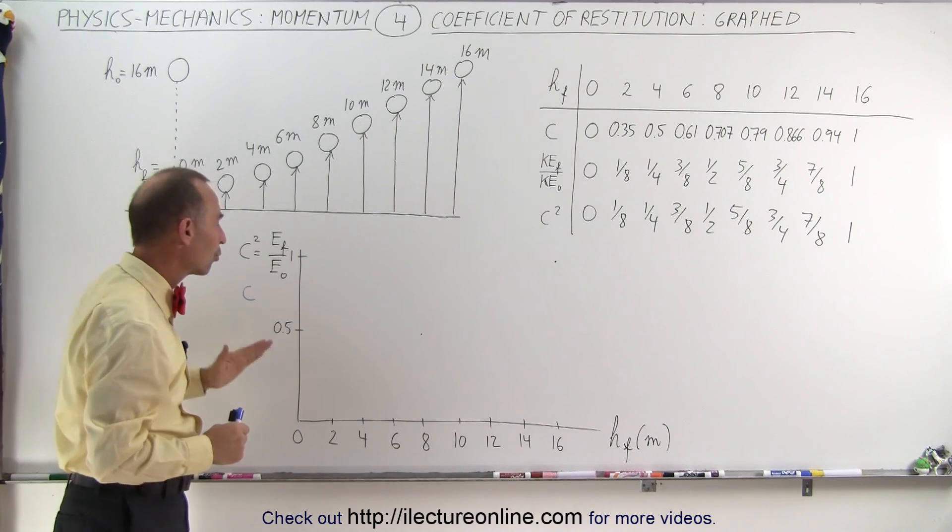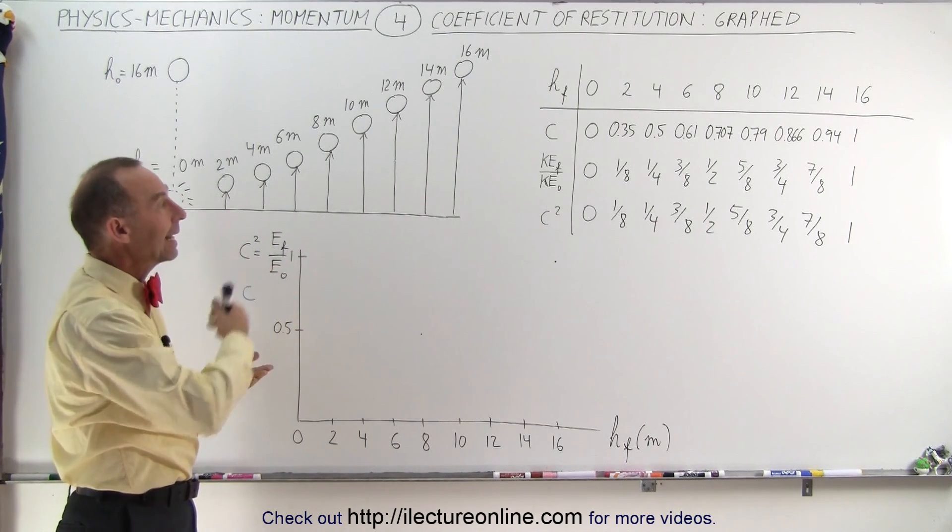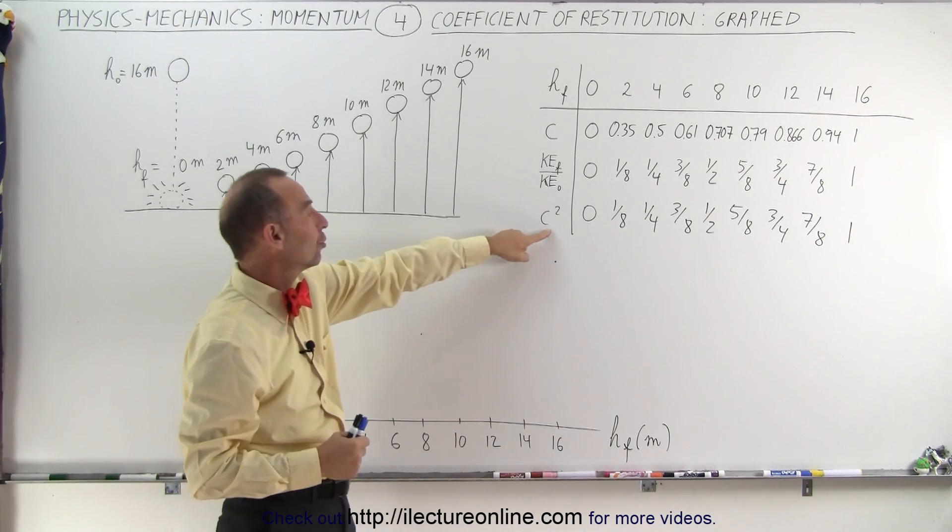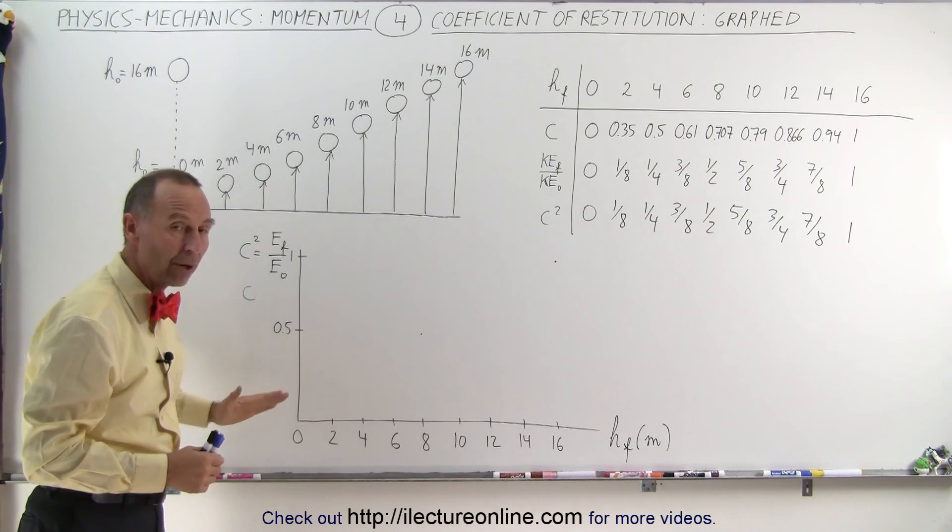So what we're going to do here is graph the relationship between the final kinetic energy to the initial kinetic energy, which is related to the coefficient of restitution squared. We'll see that's a linear graph.